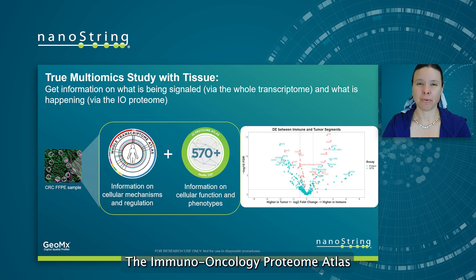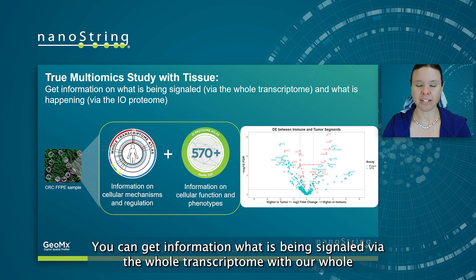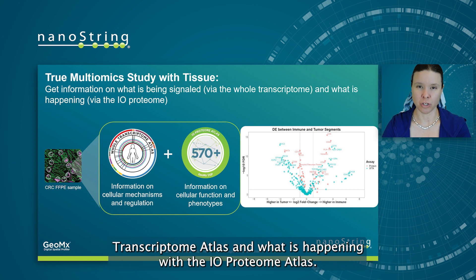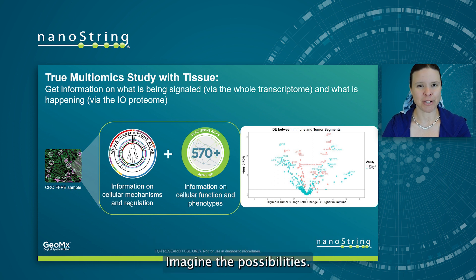The immuno-oncology proteome atlas also allows you to do true multi-omic studies in a single piece of tissue. You can get information on what is being signaled — being the whole transcriptome with our whole transcriptome atlas — and what is happening with the IO proteome atlas: two great analytes brought together on a single slide. Imagine the possibilities.